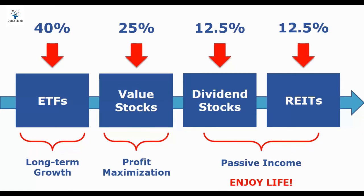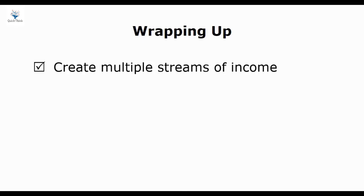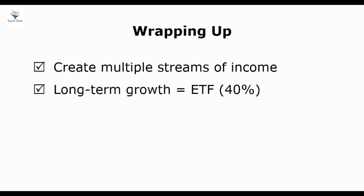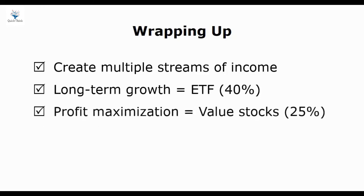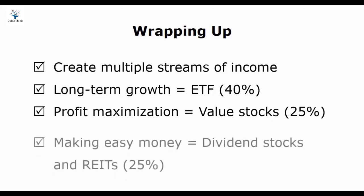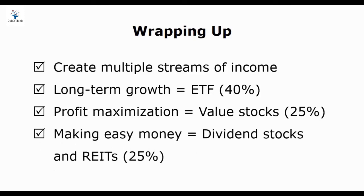Investing in ETFs will bring you a stable long-term profit. Investing in value stocks will help you grow your money faster. Investing in dividend stocks and REITs will help you create a good stream of passive income. Now you have a robust investment portfolio. In order to get wealthy, you must find ways to increase your income — you must create multiple streams of income. Investing in value stocks is much riskier than other types of investments, so if you're just starting out, you should not invest more than 25% of your money in this type. And if you want to make easy money, investing in dividend stocks and REITs may be the best option for you.